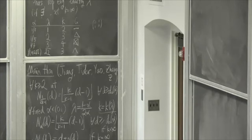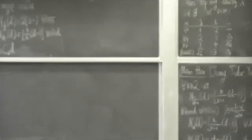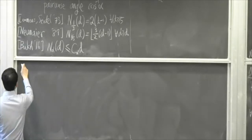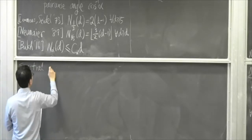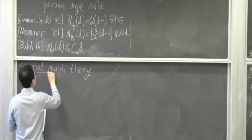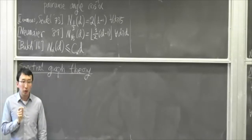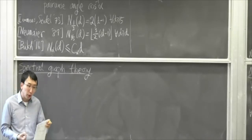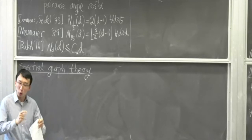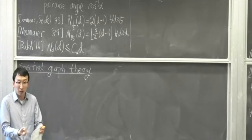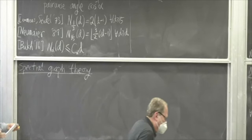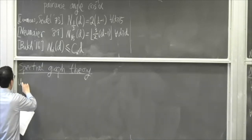Let me explain the connection to spectral graph theory. The problem of equiangular lines turns out to be a foundational problem in algebraic and spectral graph theory — in fact, the GTM textbook by Godsil and Royle on Algebraic Graph Theory has a chapter titled 'Equiangular Lines' explaining this. So what is the connection between equiangular lines and graphs?